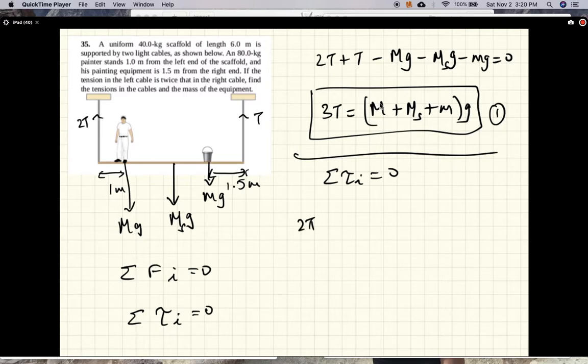So, 2T, that's the only negative torque, so minus 2T times 4.5 meters, and the other torques are positive, so plus 2T times 1.5 meters, plus mass of the scaffold, which is 40 kgs, times 9.8 meters per second squared.